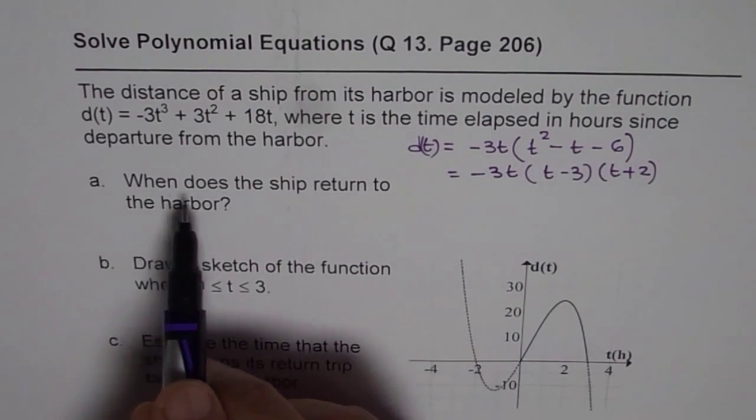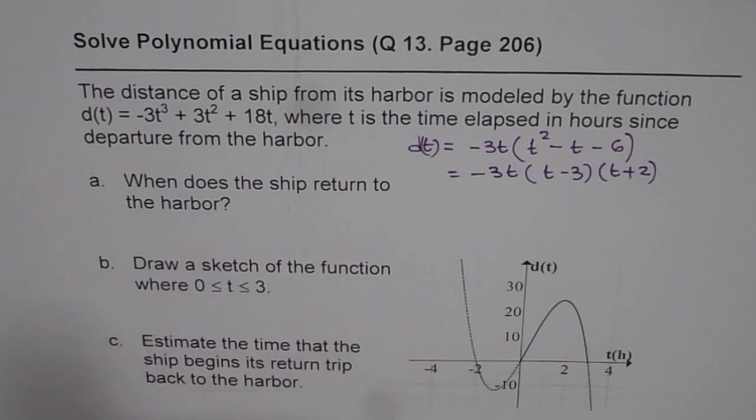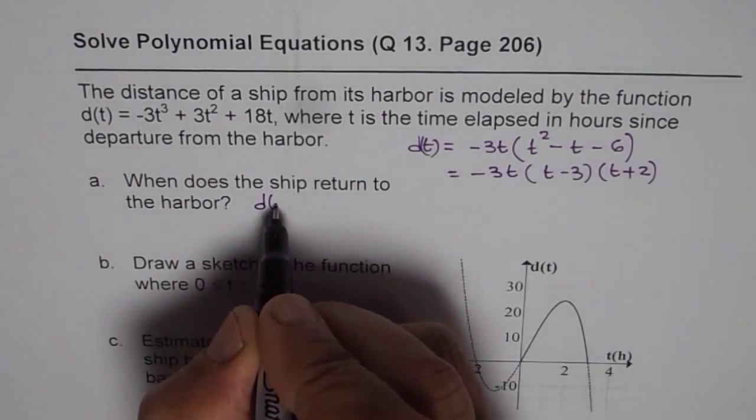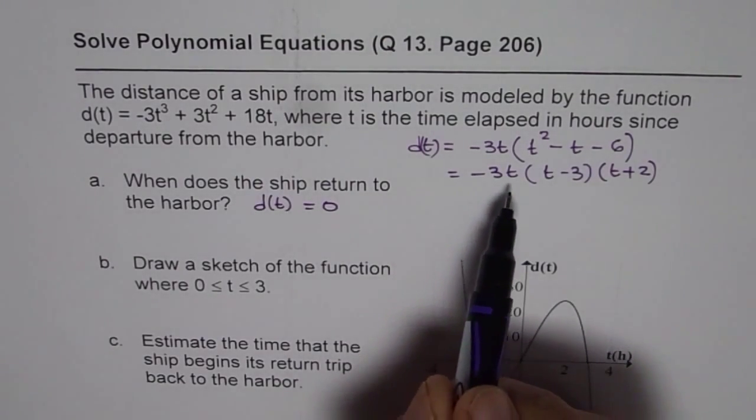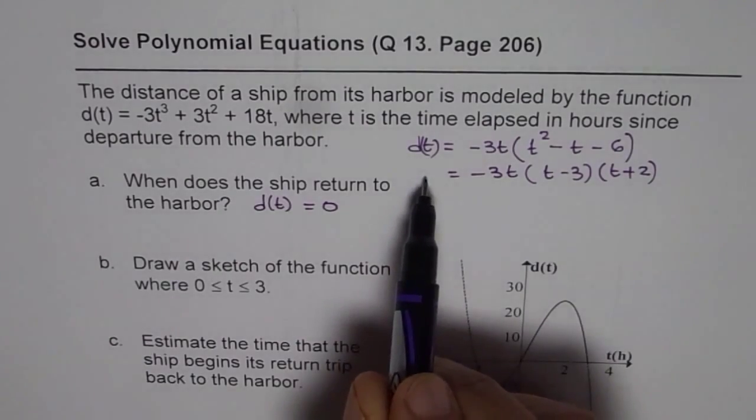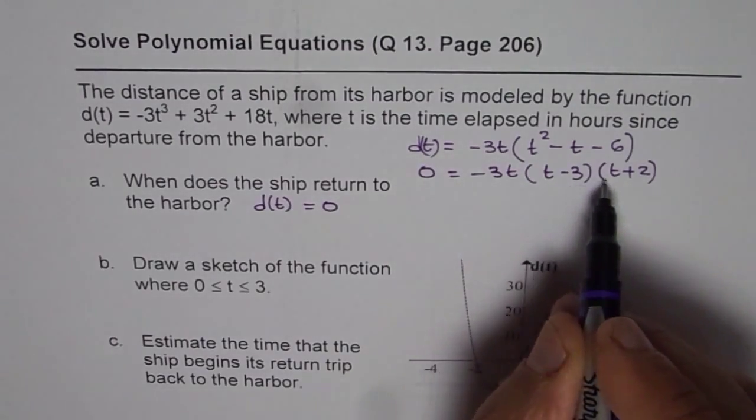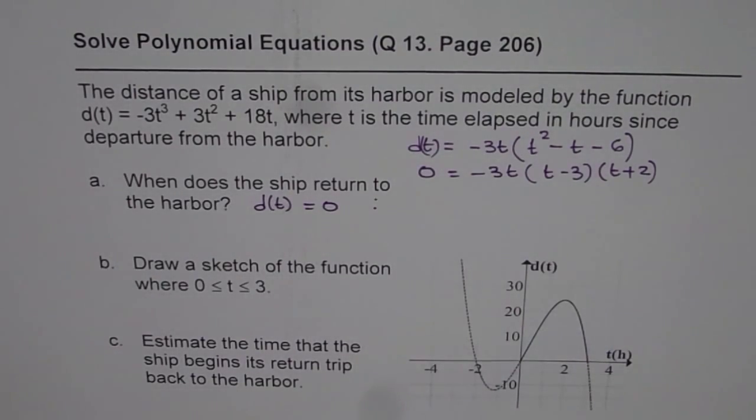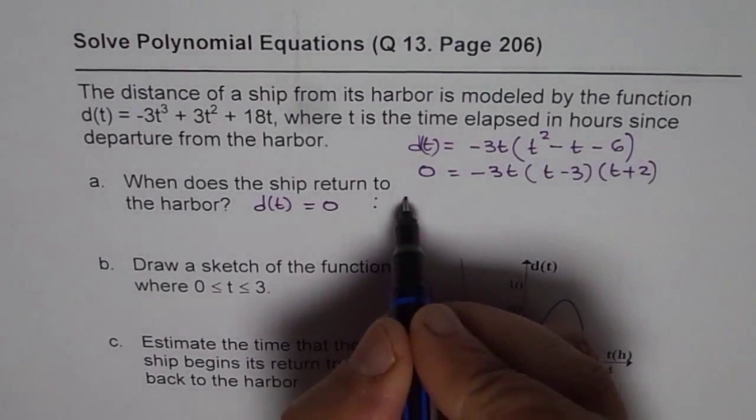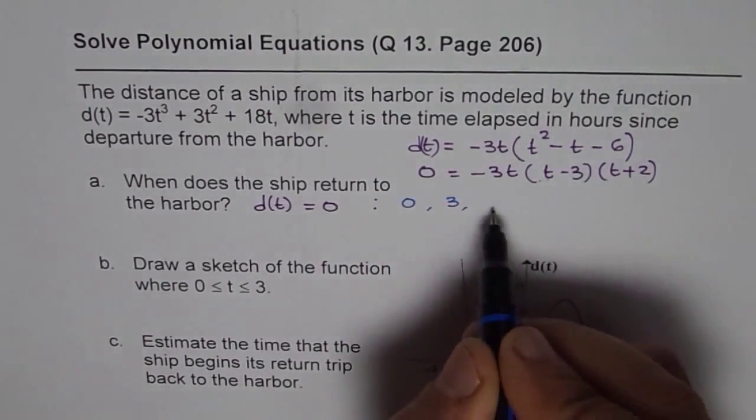The question is when does the ship return to the harbor? When the ship returns to harbor, the distance from the harbor should be 0. That means we are looking for a value of t when d(t) can become 0. The possible answers are t as 0, t as plus 3, or it could be minus 2.